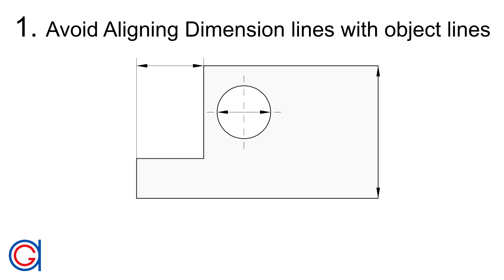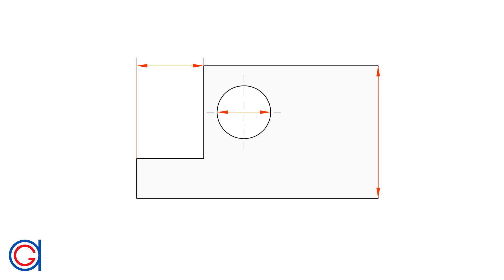Rule 1: Avoid aligning dimension lines with object lines or axes, as you can see in red color on the screen. The proper way to do this is to separate the dimension lines from the object lines, as you can see with the green lines on the screen.